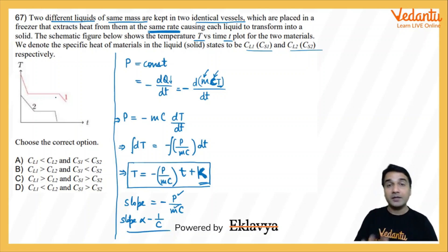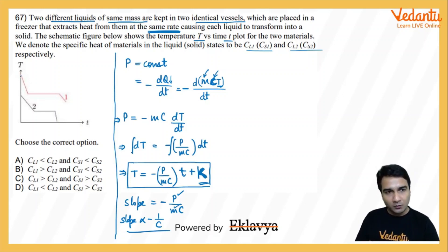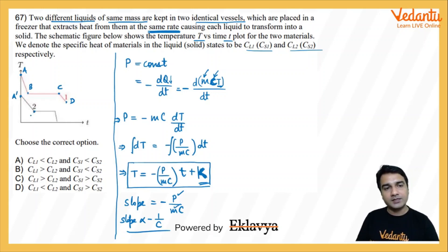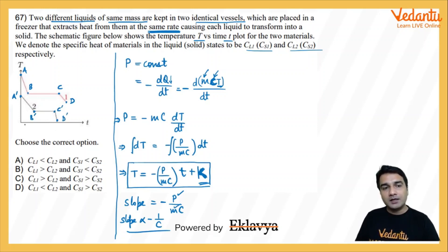From the given graph, we need to extract information for solid and liquid states. For liquid 1, we name different points as a, b, c, and d, and correspondingly for liquid 2 we have a-dash, b-dash, c-dash, and d-dash. The curves a-b and a-dash b-dash represent the liquid state.